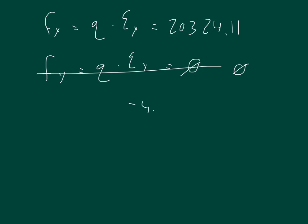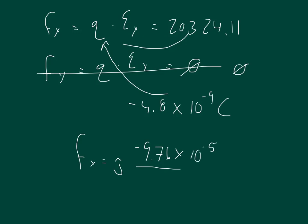So times 10 to the negative 9th coulombs. So we're going to plug in our point charge there, and we're going to multiply it by 20,324. And you should get that the force in the x direction, or the i hat, is equal to negative 9.76 times 10 to the negative 5th. And then f of y, the vector f of y, you'll get 0, because there is no electric field in the y direction.